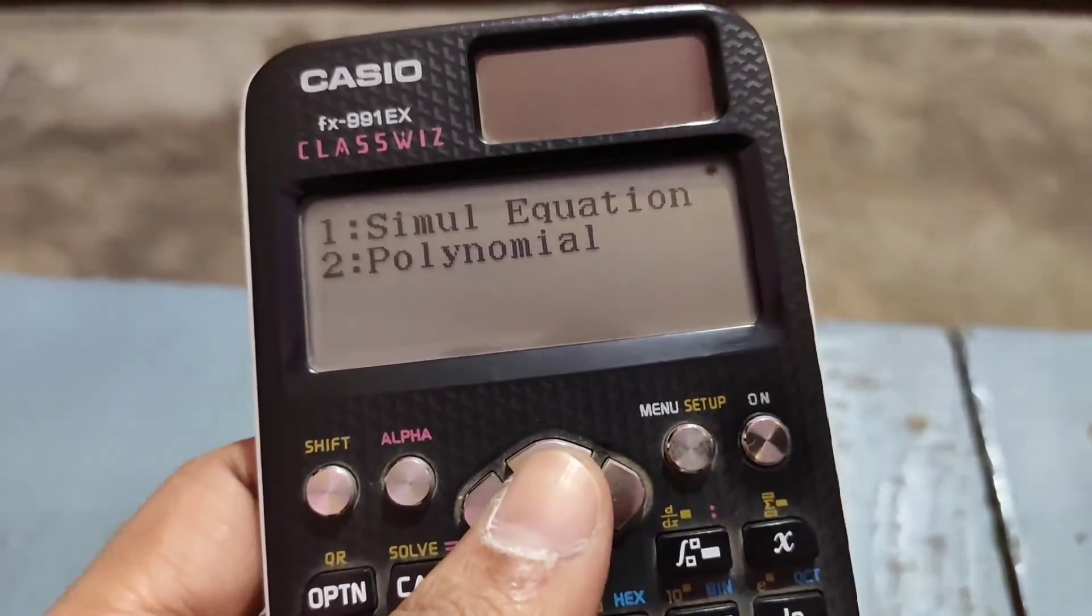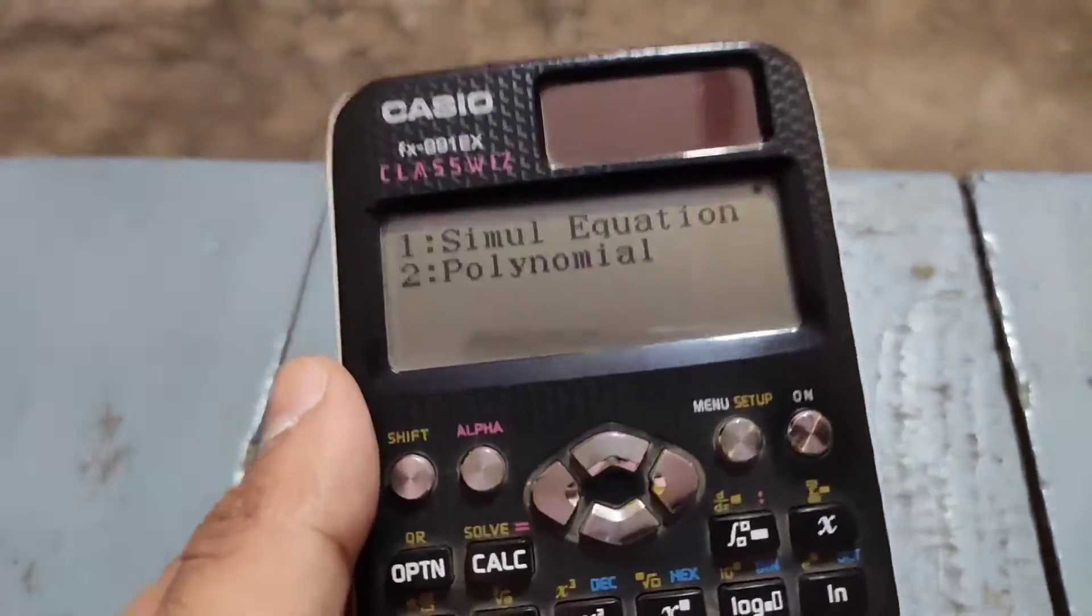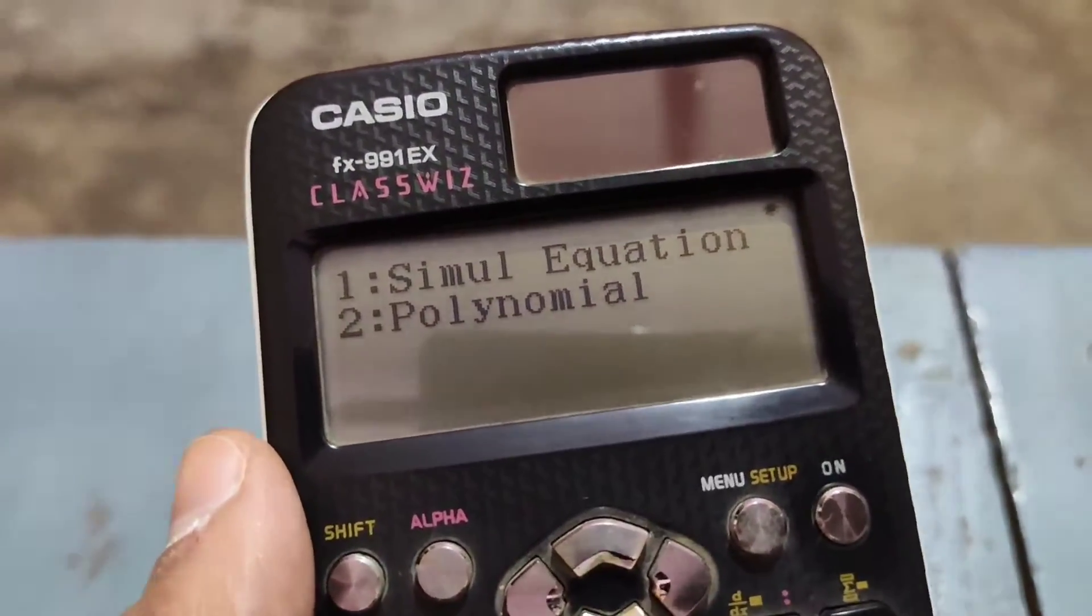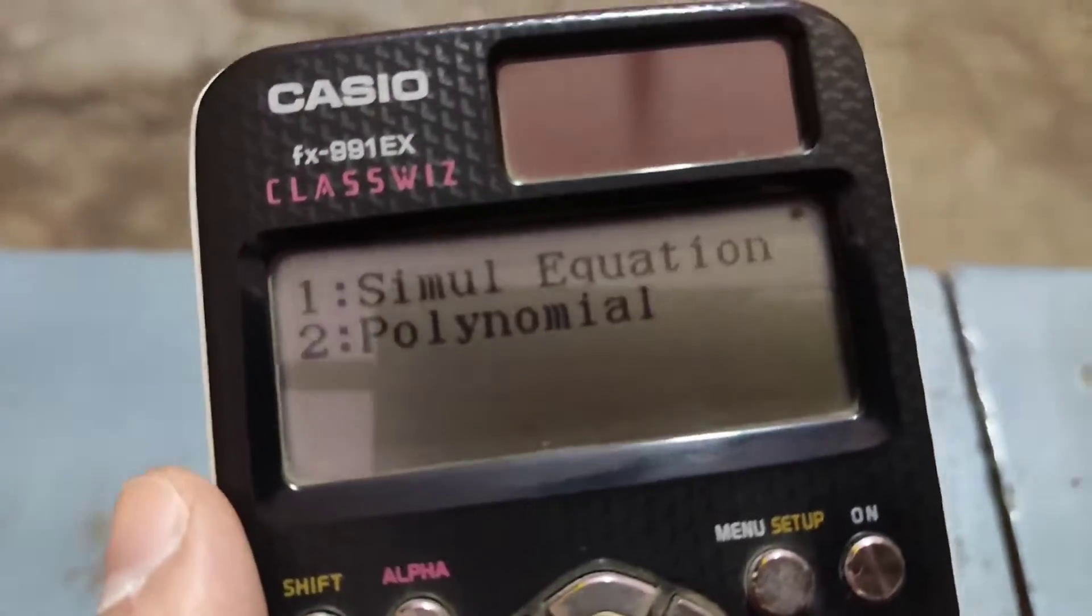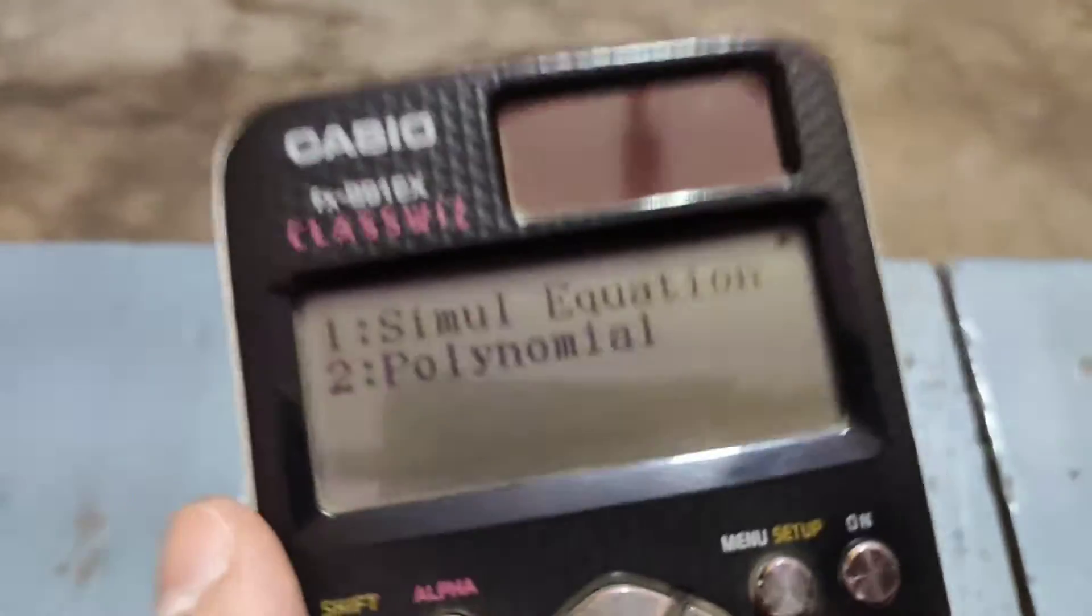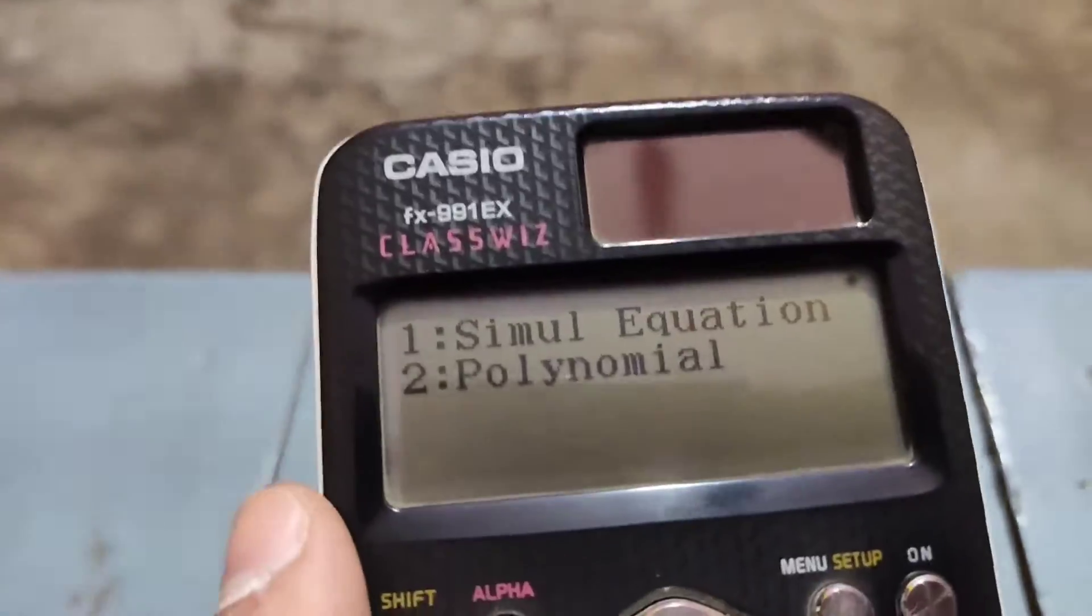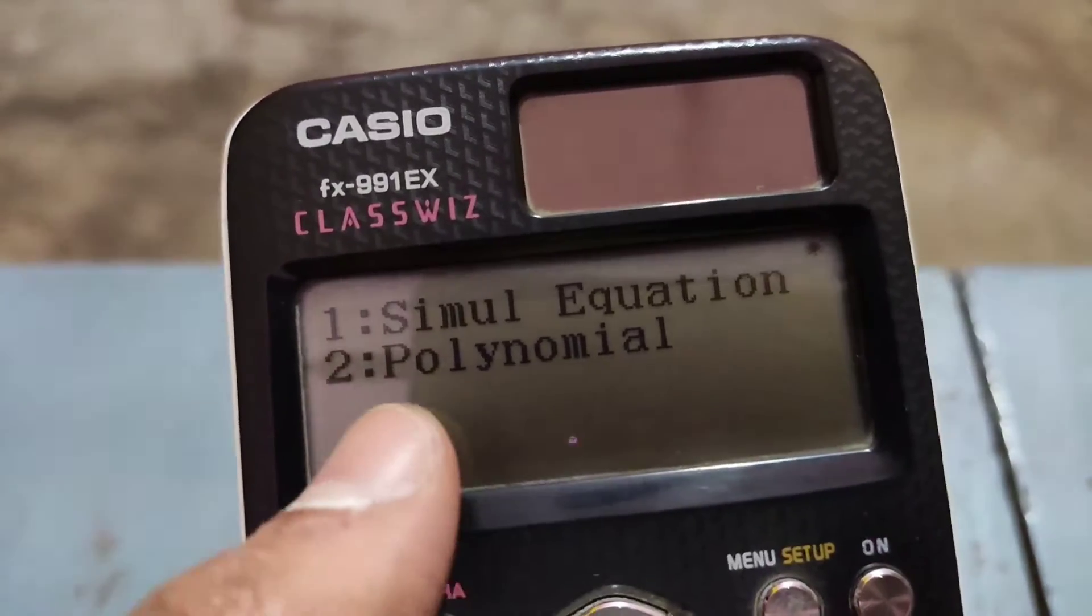Now it is asking whether we want the simultaneous equation or polynomial equation. Quadratic equation is a polynomial equation because it has three terms: Ax² + Bx + C = 0. When every term is present, it has 3 terms, which is more than 2, and which is the criteria of polynomial.